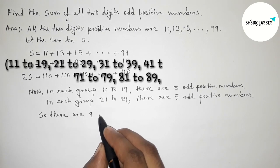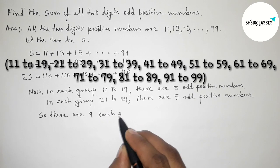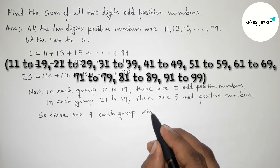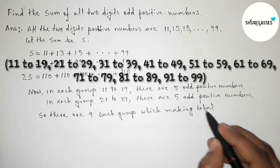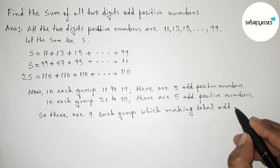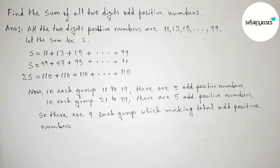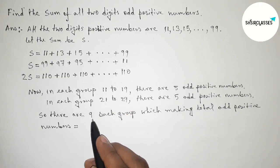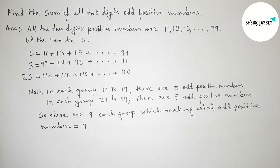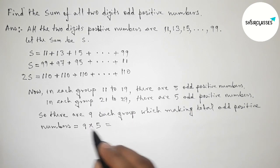Similarly, we can get a total of nine such groups. So there are nine groups in all. The total number of two-digit odd positive numbers equals nine groups multiplied by five numbers each, giving nine times five equals 45 numbers total.